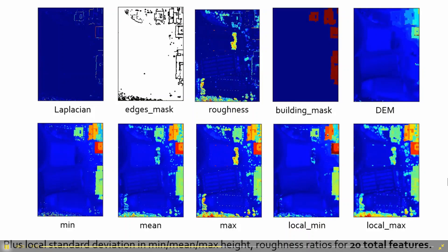We did a building mask using a flood fill algorithm that filled inside the edges. When a filled area exceeded a minimum area expected for a building rooftop and had a low average roughness, it was called a building. Then we masked out the buildings and computed a DEM to get ground terrain, and subtracted that off to get the rest of our features: minimum, mean, and max LiDAR height after subtracting the DEM. We also computed local min, mean, and max averaged over 3x3 and 5x5 spatial windows, added local standard deviation, and computed roughness ratios.